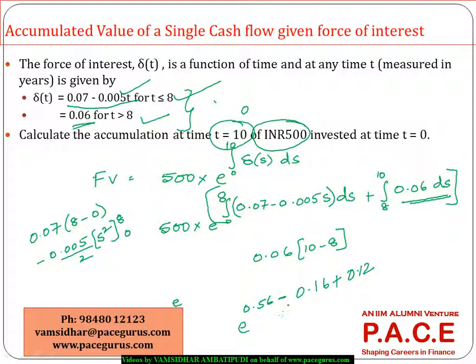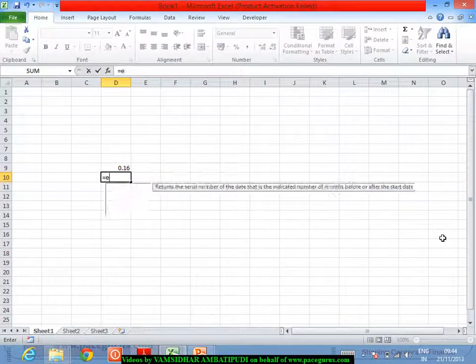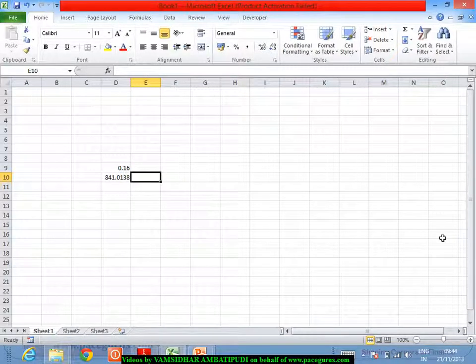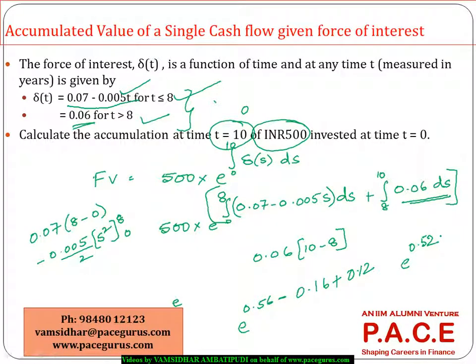Is about e power, so it is coming out to e power 0.52, which times 500... So finding out e power 0.52 times 500 gives me 841.01. So I can say that if I deposit...